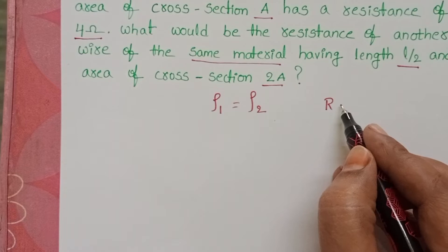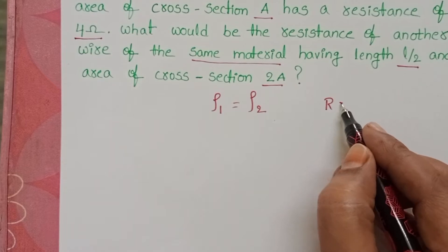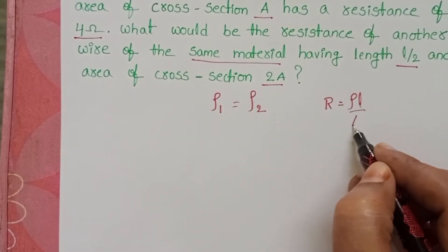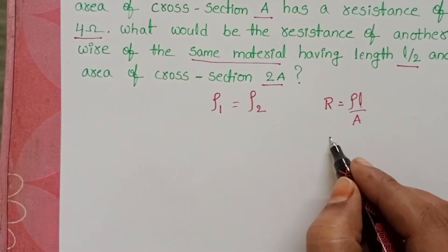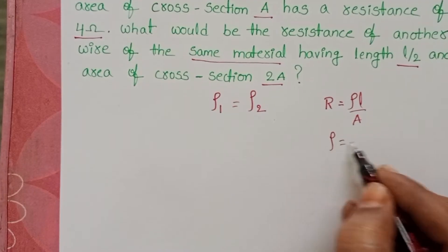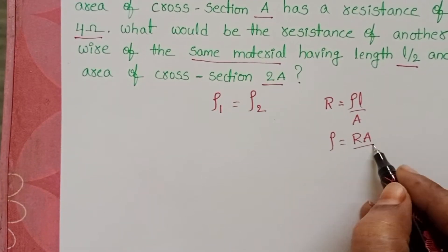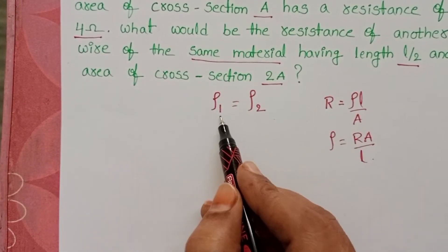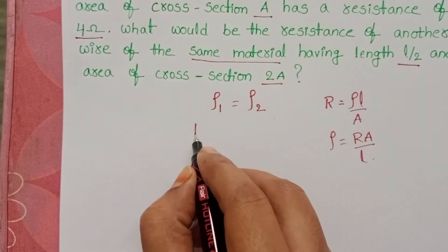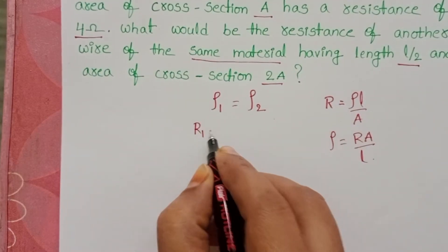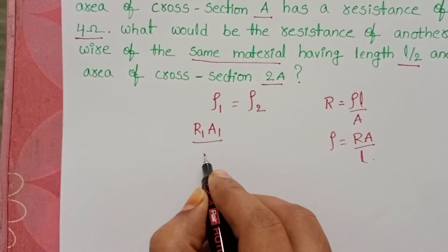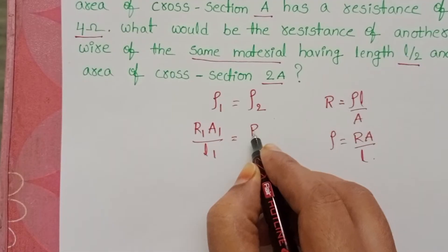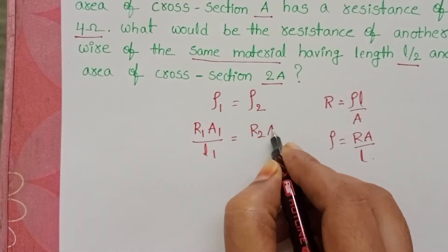The formula for resistance is R equals ρL/A. From this, ρ equals RA/L. Setting ρ₁ equal to ρ₂ gives us R₁A₁/L₁ equals R₂A₂/L₂.